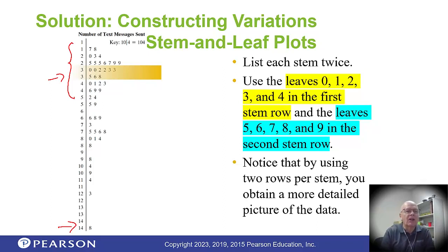This version does something a little different: instead of having just one stem for the tens, it uses two — the top one is for leaves 0 to 4 and the bottom one is for leaves 5 to 9. This gives you a different look for your picture, and you have to decide whether double stems work better or single stems do.